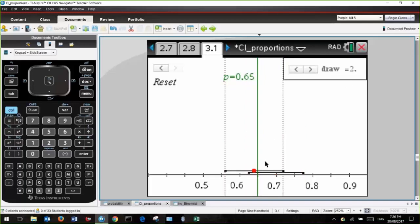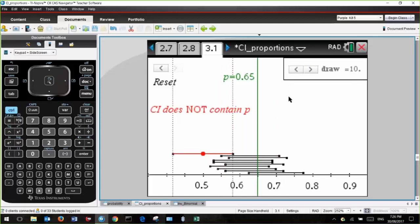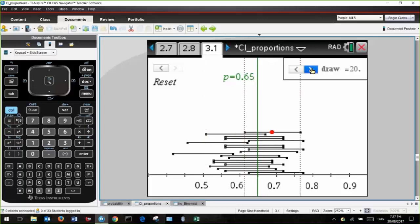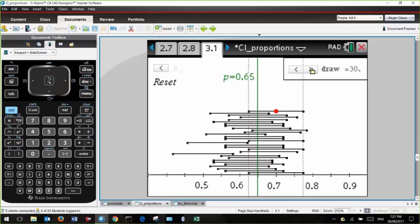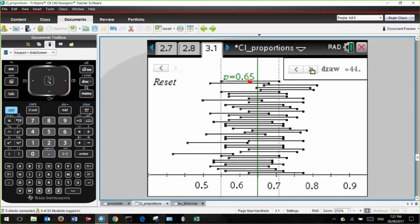Let's draw another sample. Likewise, the population proportion is within the interval, and again, and again. Now, this time this interval does not contain the true population proportion. Here's the true population proportion here, and here's the interval between this limit and that limit. Let's draw some more samples. And there's another one, and another one, and another one. So that's four so far. That time we got four out of 50 that did not contain the true population proportion, and we got 46 out of 50 that did contain the true population proportion.